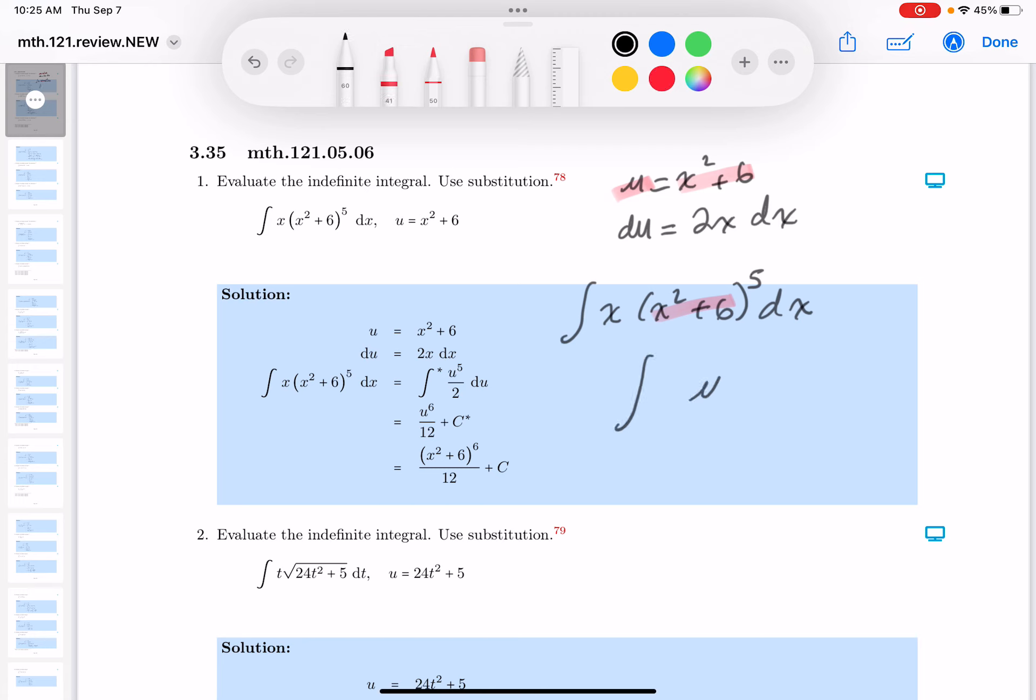Now since I made a substitution, I like to put a star here indicating I'm leaving x's for the u's. Next thing I'm looking at is the x dx. I see that here, what's it worth? A half of the du.